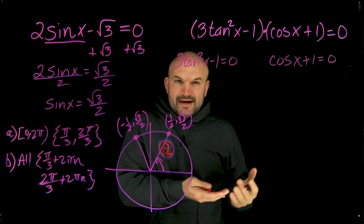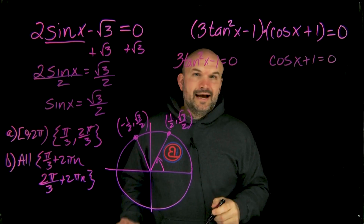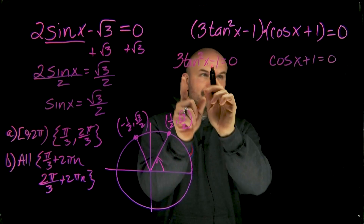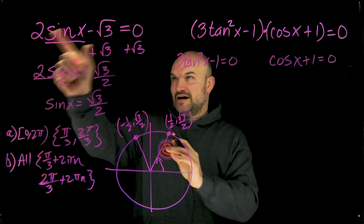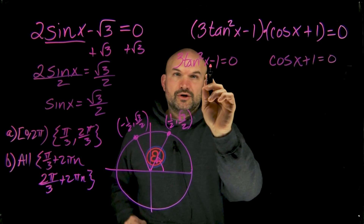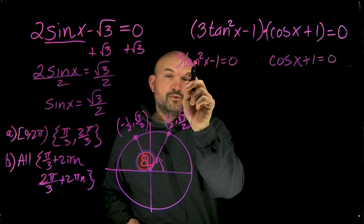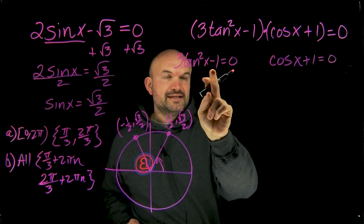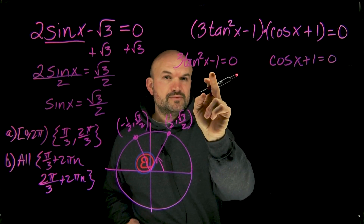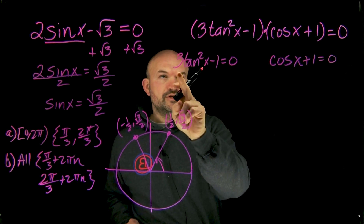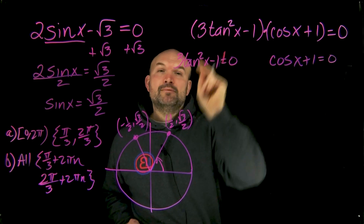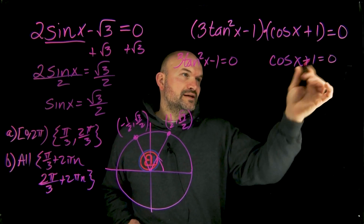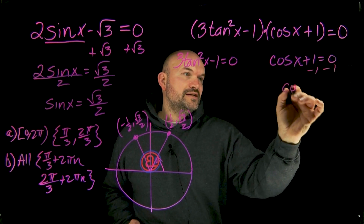Now I can use my inverse operations on each factor. We follow the same steps: undo addition and subtraction first, then multiplication and division. For the factor with x squared, we'll take the root after isolating, and for the other factor we can just subtract the one — that one's actually kind of easy.